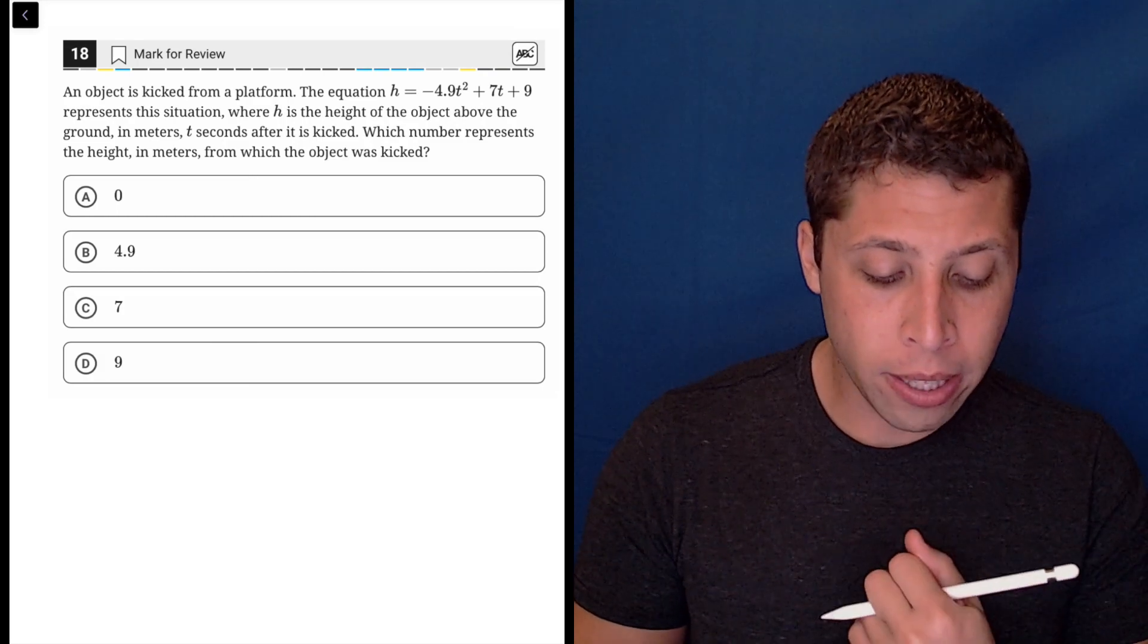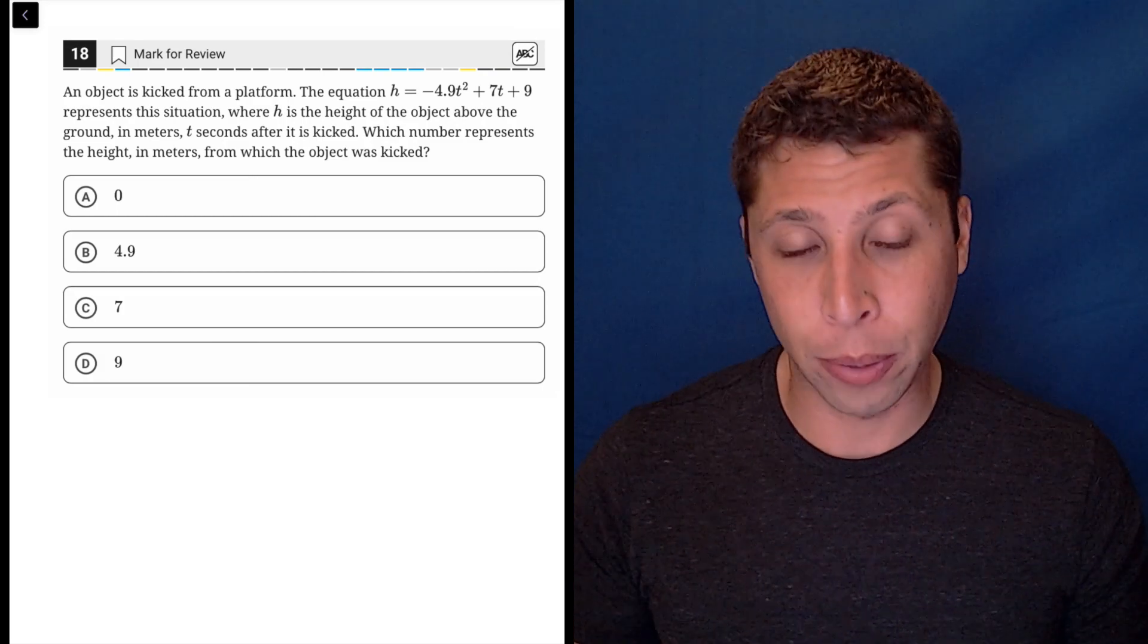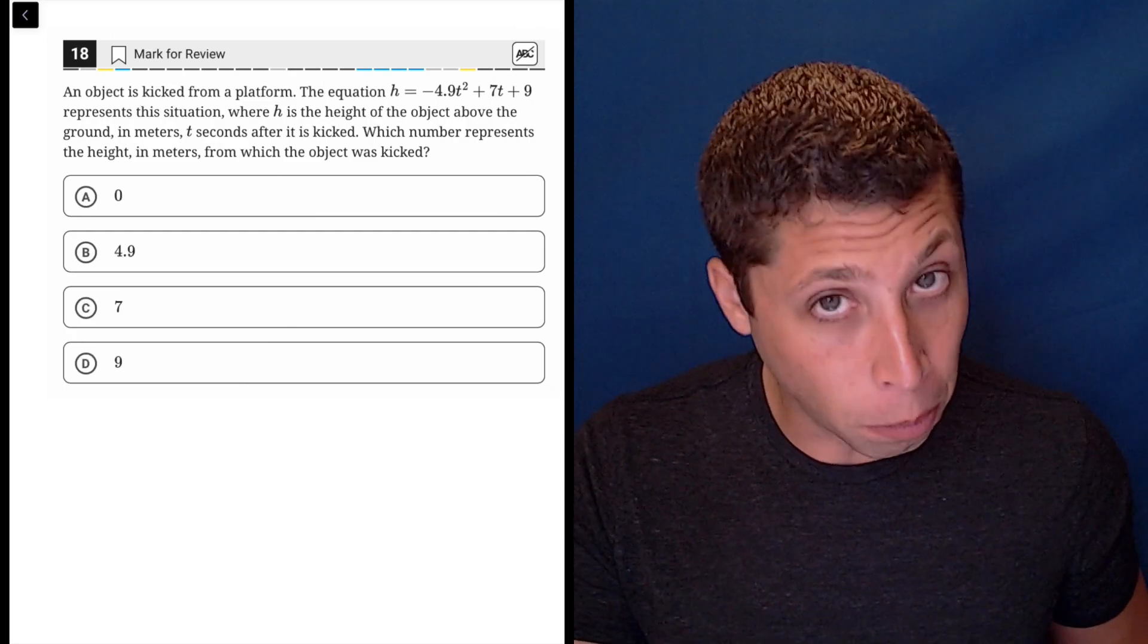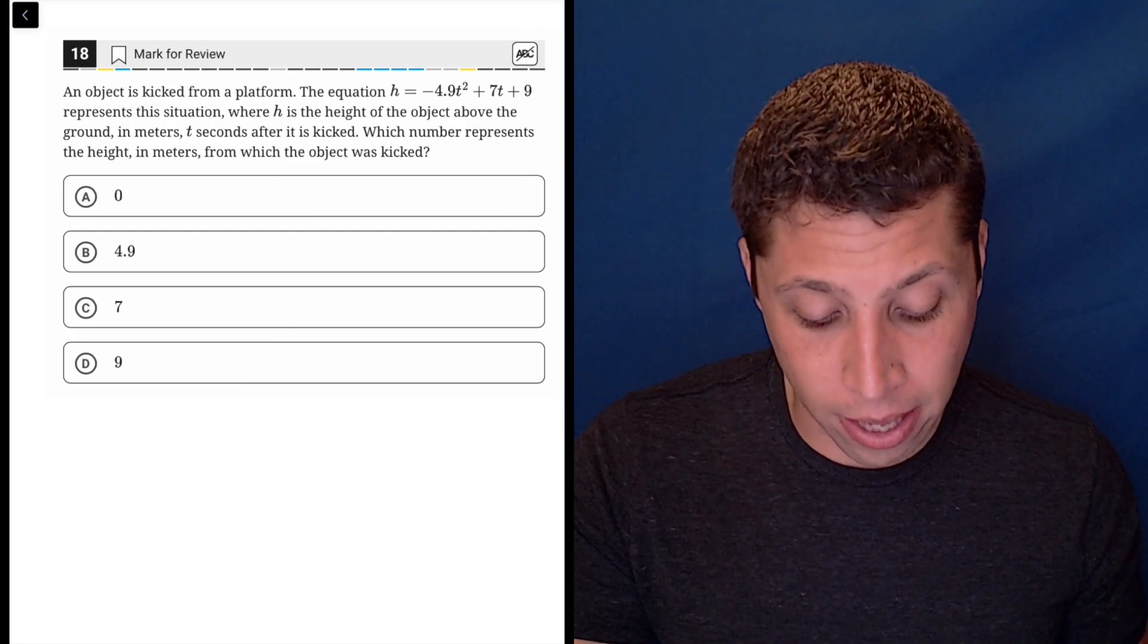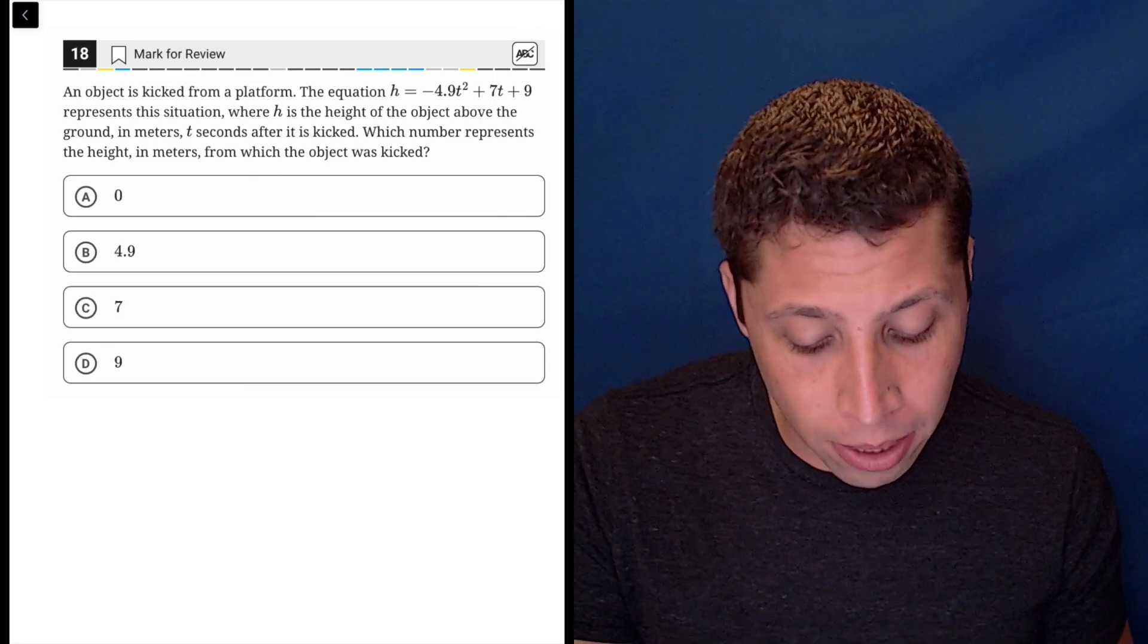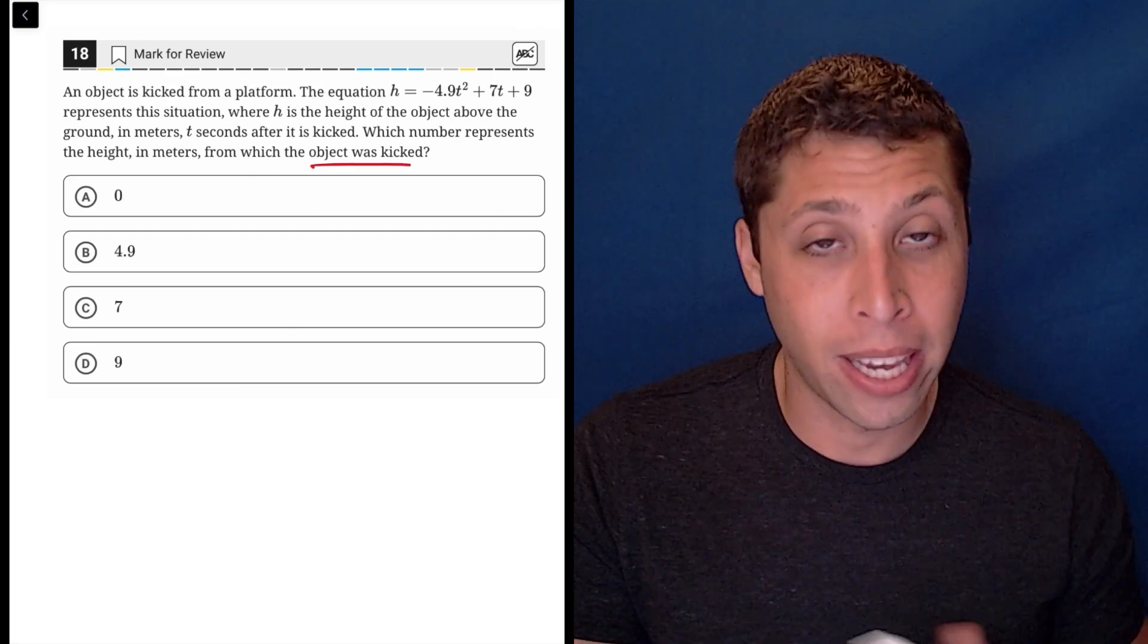So if we read this story, there are kind of two paths that we can take to the answer. Trying to interpret the story, we see the object is kicked, this equation represents that, which number represents the height in meters from which the object was kicked.